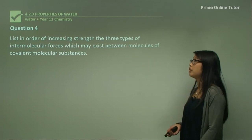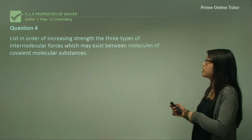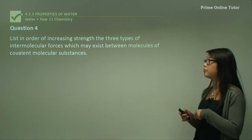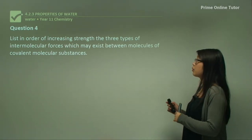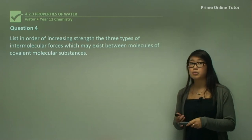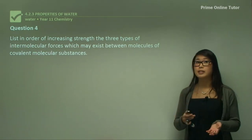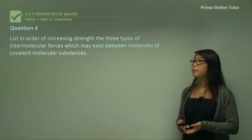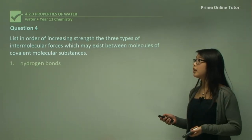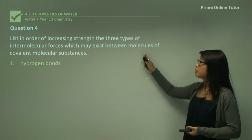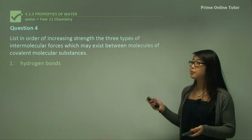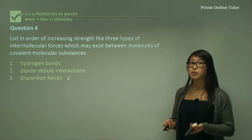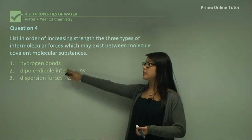Question four: list in order of increasing strength the three types of intermolecular forces which may exist between molecules of covalent molecular substances. The intermolecular forces are dispersion forces, dipole-dipole, and hydrogen bonding. In order of increasing strength: dispersion forces are the weakest, followed by dipole-dipole, and hydrogen bonds are the strongest.